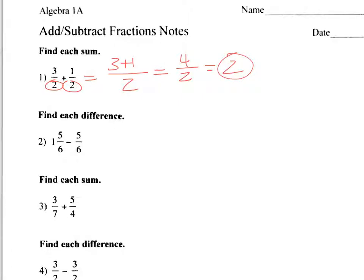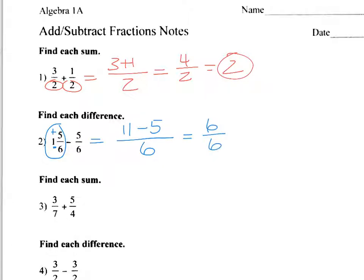For subtracting, same thing — but in this case we have a mixed number, so you have to change it to an improper fraction by multiplying and then adding. This is all over six because we have a common denominator. Six times one is six, plus five is eleven, so we get eleven over six minus five over six. Eleven minus five is six over six, which simplifies to one.